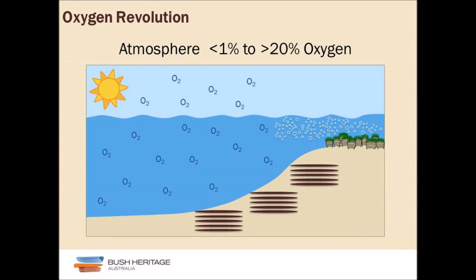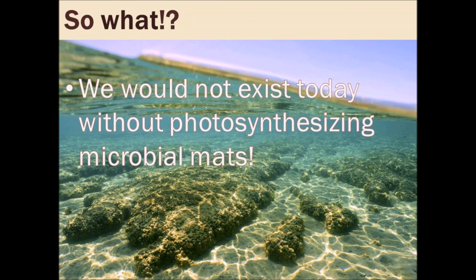What was on early Earth a reducing volatile atmosphere with less than 1% oxygen has changed over millennia to over 20% oxygen. That change in the atmosphere is basically what allowed for evolution. You and I would not be sitting here today if it weren't for all that photosynthesizing activity from early microbial mats.